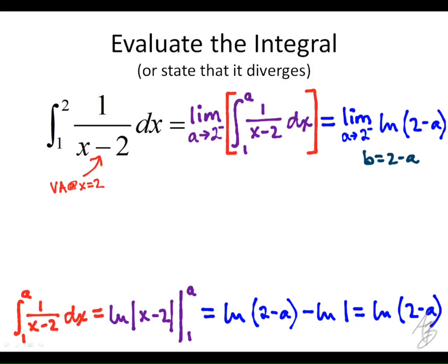If we substitute and just say b is 2 minus a, and I'm doing that so that I can simplify this natural log, then what I'm going to do then is rewrite it in a way that makes it a little bit easier. So if b is 2 minus a, then what is b going to approach?